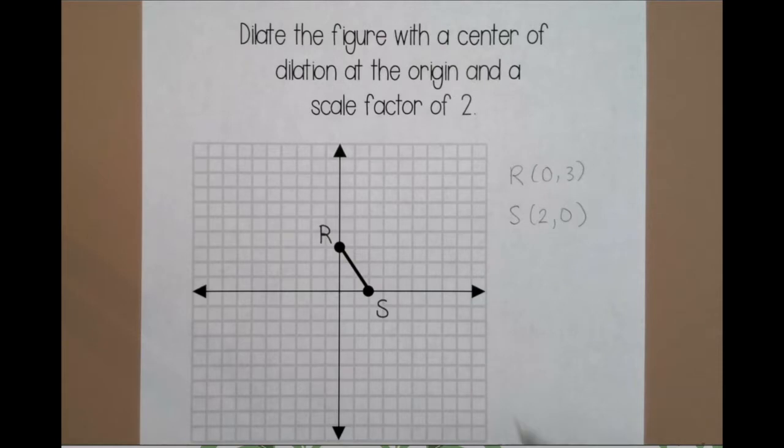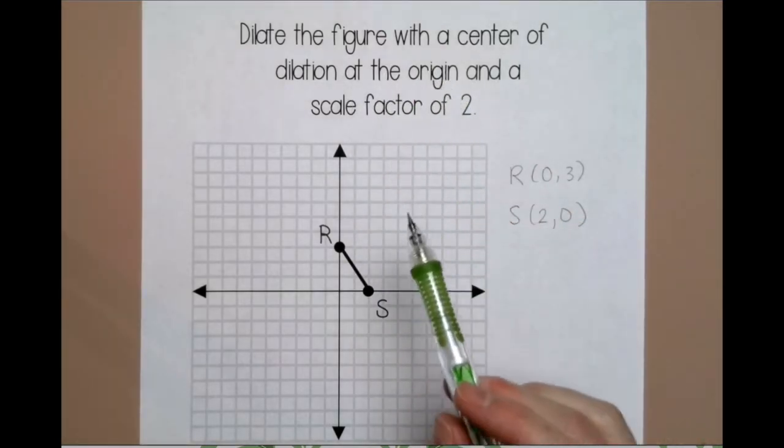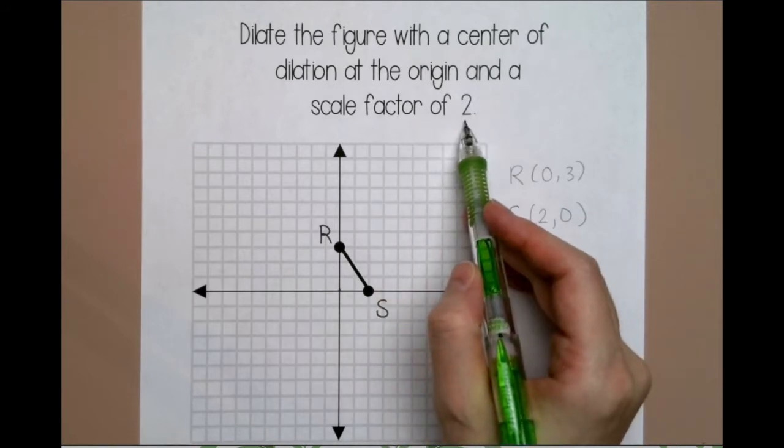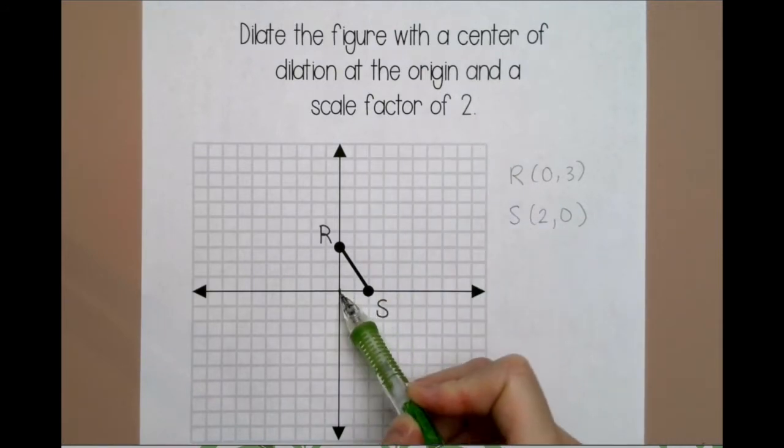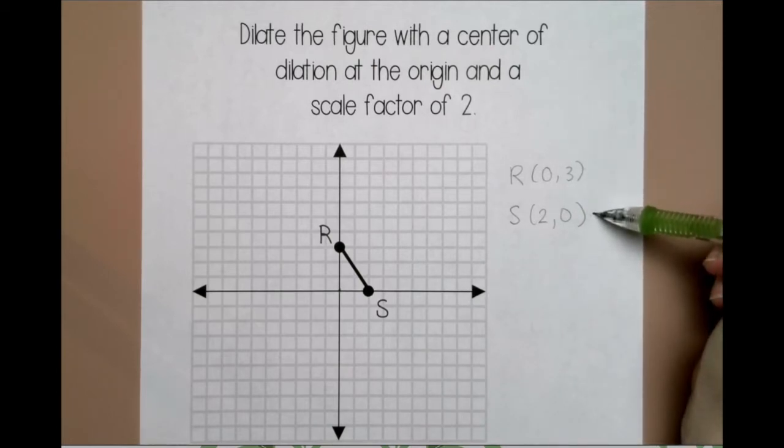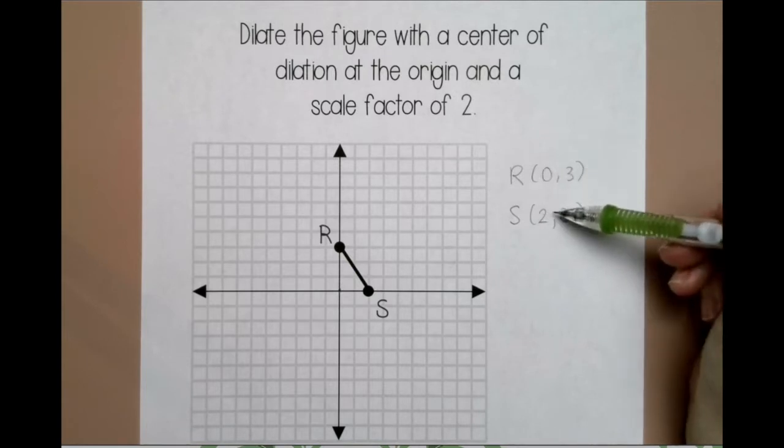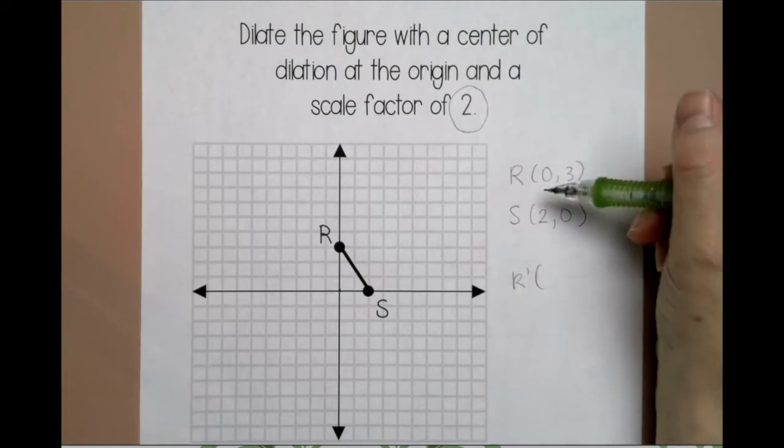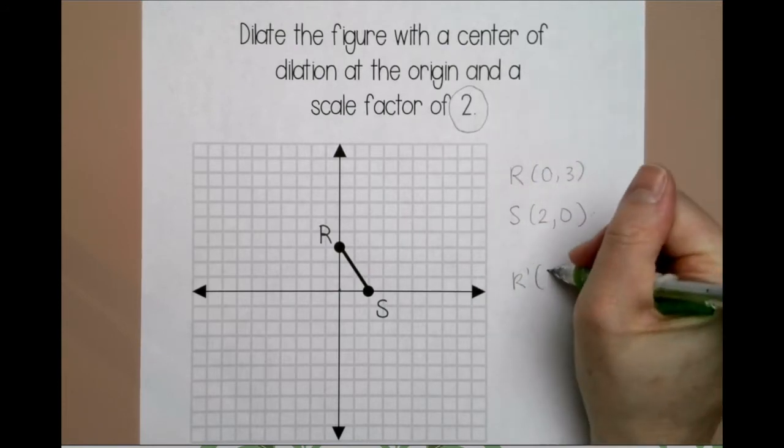In the first example, I want to dilate the figure with a center of dilation at the origin, which is (0, 0), and a scale factor of 2. When the center of dilation is the origin, you want to start by listing out your coordinates – so I have R and S already written over here – and then you multiply each coordinate by the scale factor, which is 2. So for R prime, I'm going to multiply 0 times 2, which is 0.